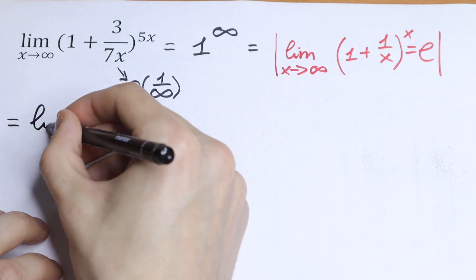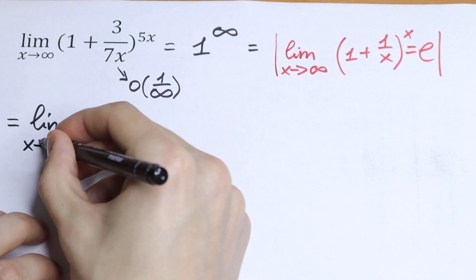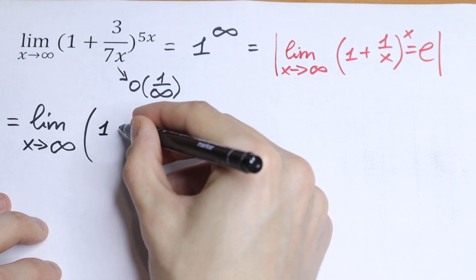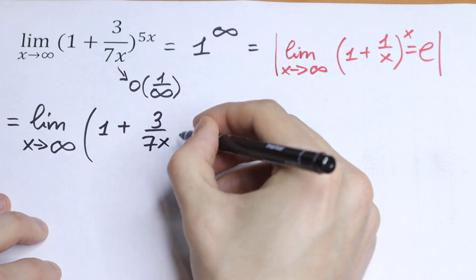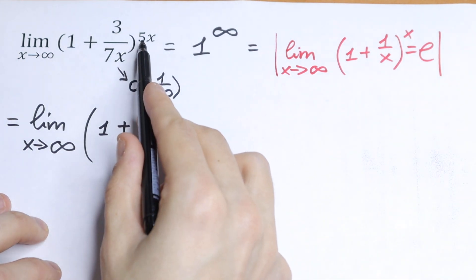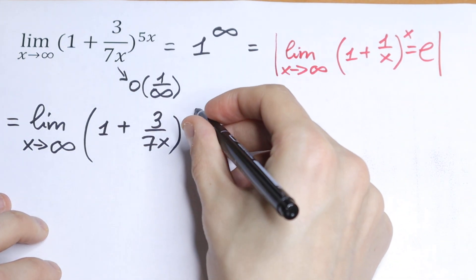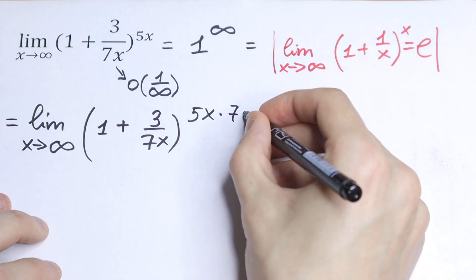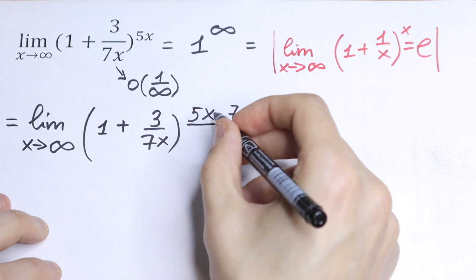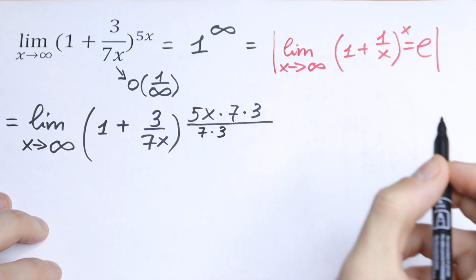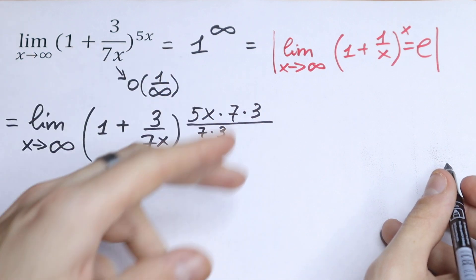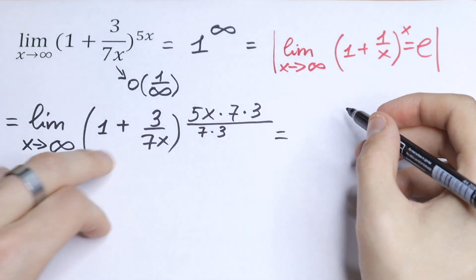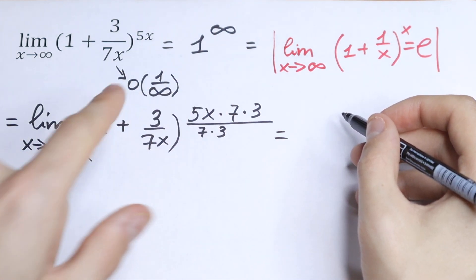So we can write this limit as x approaches to infinity in the next way. We can write this limit as 1 plus 3 over 7x. But we can multiply this 5x by the product of 7 times 3 and dividing by 7 times 3. Why do I multiply by 7 times 3? I'll show it a little bit later. But if we multiply this, if we change the order a little bit,